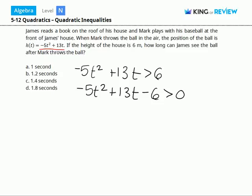We can simplify this to 5t squared minus 13t plus 6 is less than 0.